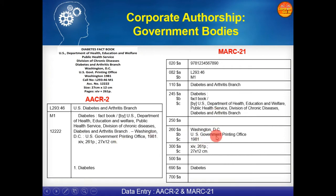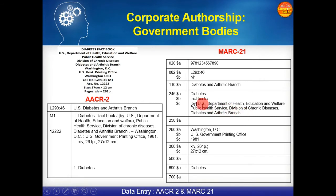Now let's see how we do this in MARC 21 format. Field 020 for ISBN, 082 for call number. You might observe that we are not using field 100 because this is a case of corporate authorship, so the information is given in field 110. Dollar a contains 'Diabetes and Arthritis Branch.' Field 245 contains the title 'Diabetes Fact Book,' and the statement of responsibility will contain all information like US Department of Health, Education and Welfare, Public Health Service, Division of Chronic Diseases, Diabetes and Arthritis Branch. Field 260 contains publication details, 300 physical description, and 6XX for subjects.